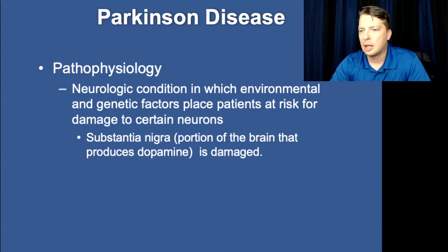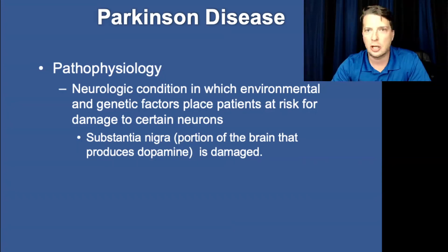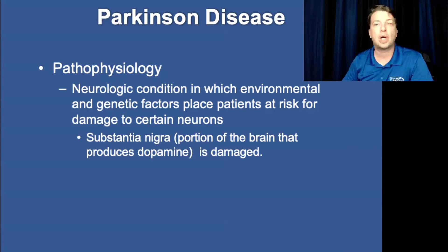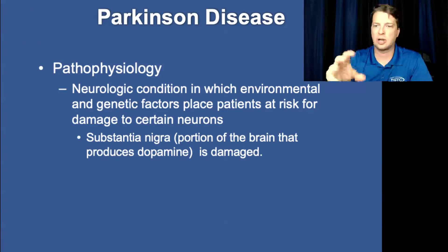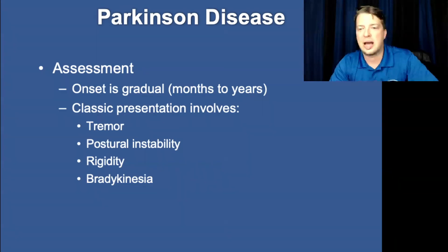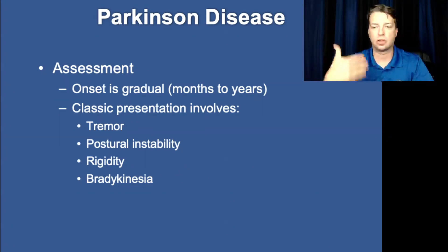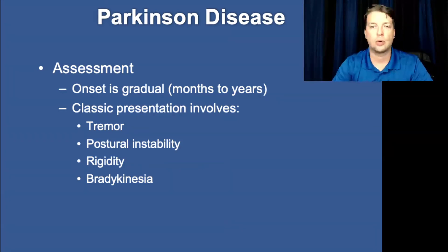Parkinson's disease is more commonly seen in the elderly. It involves the substantia nigra — the portion of the brain that produces dopamine. Dopamine plays a huge function in neuron control, and without it there is loss of neuron function. In Parkinson's patients this presents as loss of motor control or erratic motor control — the patient develops tremors in their hands, a shuffling gait, bradykinesia (slow movement), loss of posture, and possibly muscle rigidity.